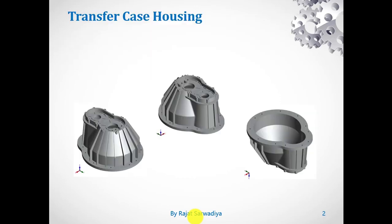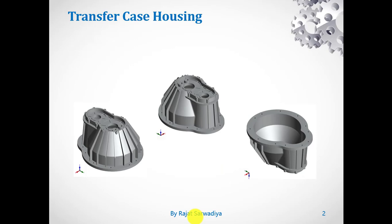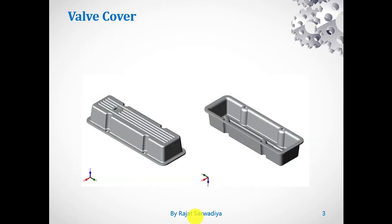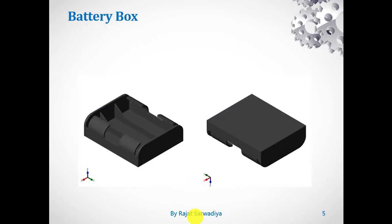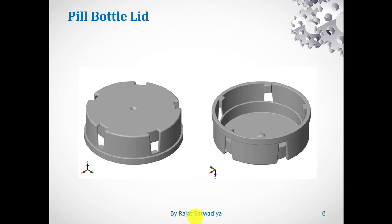I will show you some components like transfer case housing — you can see the component. This is one of your casting components; you produce it by casting. Valve cover, there can be flanges. A battery box can be produced by injection molding or any other process depending on the case. There is something common in these casting, forging, plastic or injection molding components.